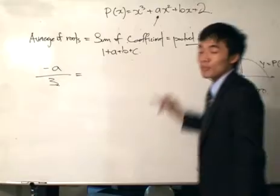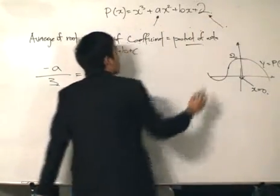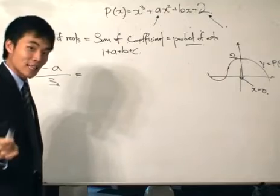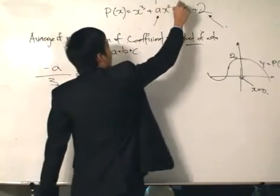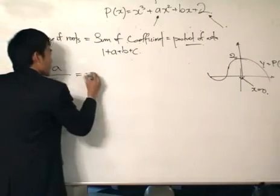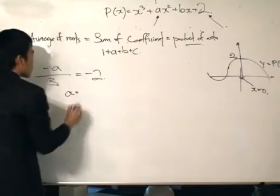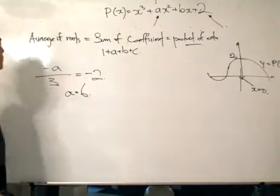So what do we know about the product of the roots? The product of the roots would be received from this number over here. However, A will be negative, which is minus, plus, minus. So minus C. This is equal to minus C, which is minus 2. And then A is equal to 6. Simple enough.